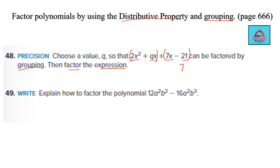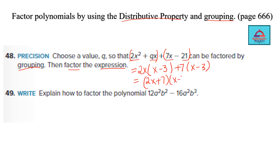The common factor of 7 and 21 is 7, leaving us with (x − 3). When using the grouping method, the bracket must be the same in both groups, so (x − 3) will appear in the first bracket as well. The first term 2x² gives us 2x, and combining gives us (2x + 7)(x − 3).